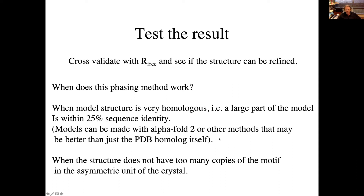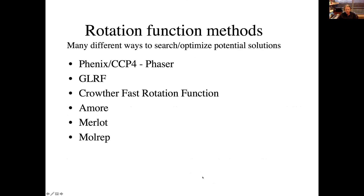The number of structures solved by molecular replacement is increasing in the PDB because we have so many examples upon which to build models. When does it not work? When the structure has too many copies of the motif in the asymmetric unit of the crystal, or if the homolog is not accurate enough to identify the proper solution. There are a variety of different algorithms — I only showed one example — to search and optimize potential solutions.